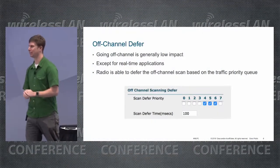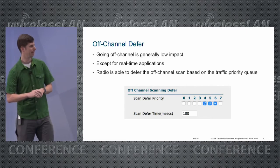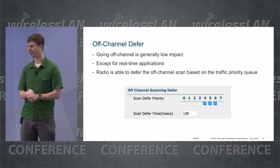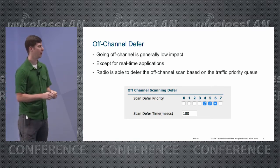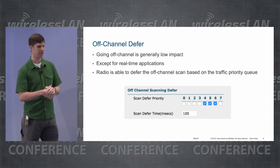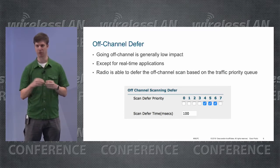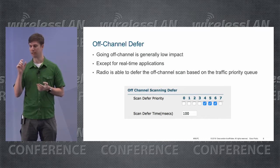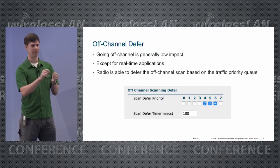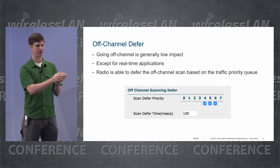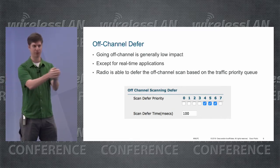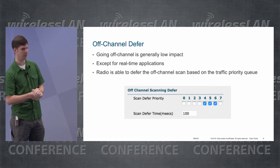So the AP goes off-channel — does that impact client performance? Usually it doesn't for most traffic. However, there are times, especially with real-time applications like voice over Wi-Fi, where going off-channel for 50 milliseconds can be quite impactful. And that 50 milliseconds is a bit of a misnomer, because it takes time for the radio to tune to the new channel, spend 50 milliseconds off-channel, and then tune back to the original channel — so it can actually be a little more than 50 milliseconds.